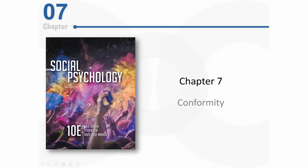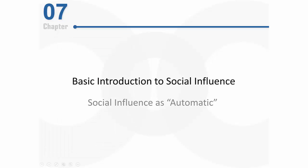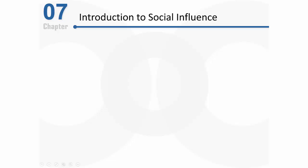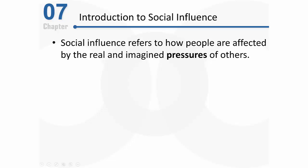Welcome back. Let's talk about conformity. Conformity is all about social influence. We'll begin with a basic introduction about what social influence is, and then we'll start talking about how sometimes we can have an automatic reaction to social influence. This chapter on conformity really focuses on the powerful effects of social influence, which we can define as the study of how people are affected by the real and even imagined pressure of others.